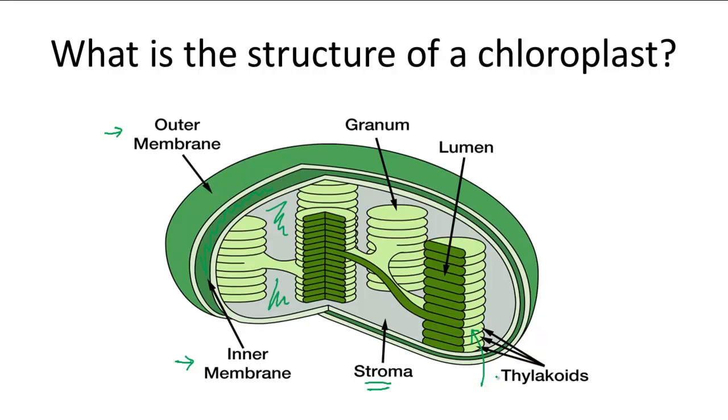One singular membrane disc is called a thylakoid, and this surrounds the lumen. Multiple thylakoids stacked on top of each other form grana, or singular granum. The thylakoid membranes are the site of light reactions.